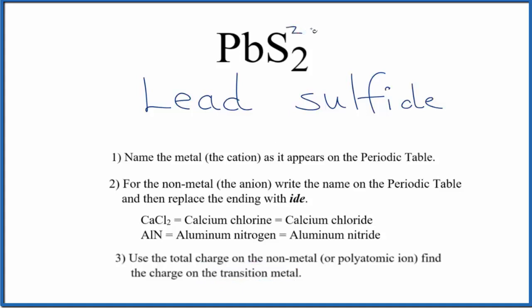Sulfur is 2 minus, and we have two of them. So that's total 4 minus. The lead's going to have to be 4 plus for those charges to balance, give us a net charge of 0. And we show the 4 plus here by putting a Roman numeral 4 in parentheses between the names.